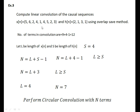Now see the next problem. Here x of n has length 9 and h of n has length 4. Therefore the number of terms in the linear convolution are 9 plus 4 minus 1 equals 12. Let L be the length of x of n and S be the length of h of n. With S equal to 4, the formula N equals L plus S minus 1 becomes N equals L plus 3. The condition is L greater than or equal to S, so we take L equal to 4, giving N equal to 7. We perform circular convolution with N equal to 7 terms. Since h of n has only 4 terms, N minus S equals 7 minus 4 equals 3 zeros get appended.